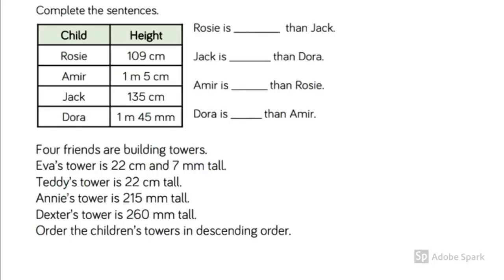This is a section from the do it part of our maths worksheet. First of all you get a chance to practice using the symbols for comparing length measurements. Then you've got some sentences to complete followed by looking at the height of towers which have been built and then putting them in the order starting with the tallest first descending to the smallest.